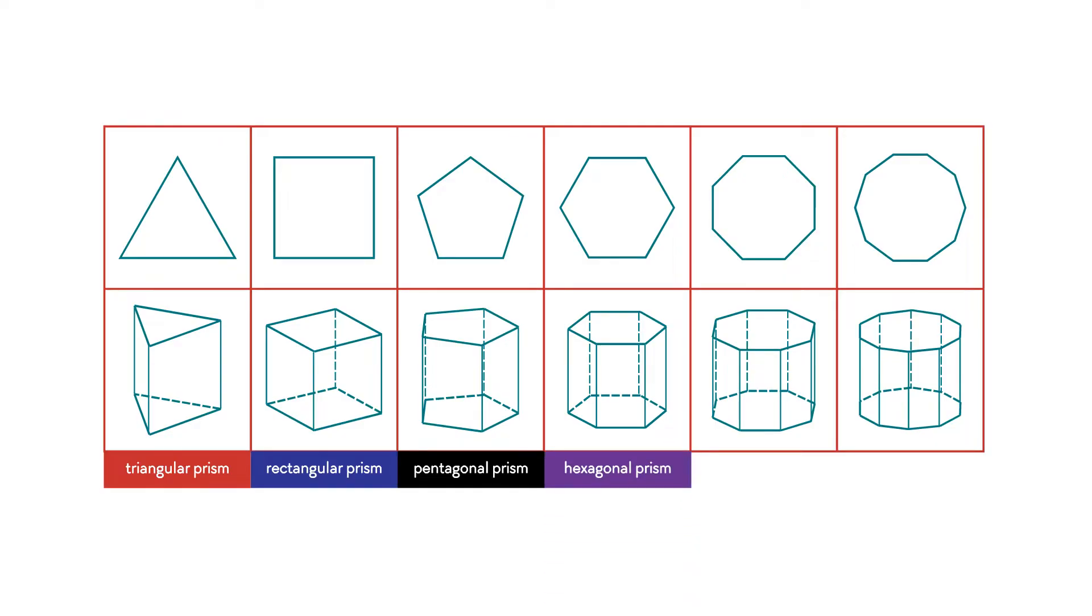For a hexagonal prism, the two bases are hexagons. The octagonal prism has two octagon bases. The decagonal prism has two bases that are decagons.